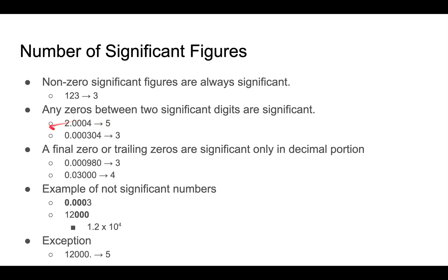So 20004 has five significant figures. For 0.000304, we have two significant figures from the 3 and 4. The zero between them is also significant since it lies between two significant digits, giving us three significant figures total — not six or seven — because the leading zeros are not significant.